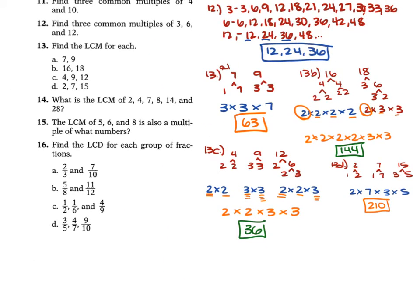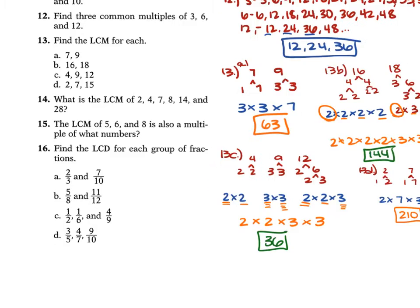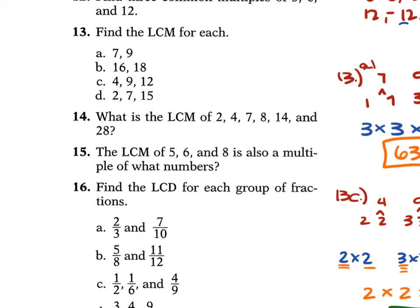For problem 14, find the Least Common Multiple of 2, 4, 7, 8, 14, and 28. The easiest way is to start with the largest number, 28, and check if all others divide into it. 2 goes into 28 (14 times), 4 goes into 28 (7 times), but 8 does not go into 28 evenly. So try 28 times 2, which is 56. Does 2 go into 56? Yes. Does 4? Yes, 14 times. Does 7? Yes, 8 times. Does 14 go into 56? Yes, 4 times. So 56 is the Least Common Multiple.